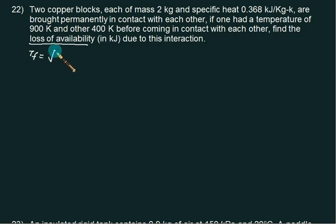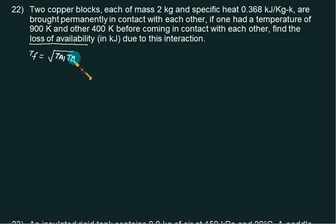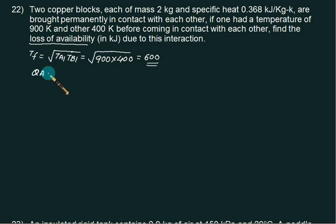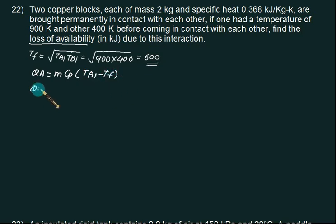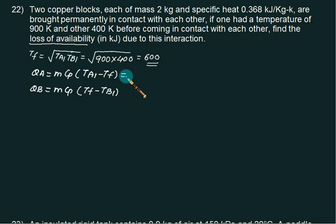First, we assume entropy generation equal to 0 and ideally find T_final. When we use this equation with entropy generation equal to 0, it means that some heat is lost to the surrounding. So T_final will be the square root of T_a1 multiplied by T_b1, which is the square root of 900 into 400. That answer comes out to be 600. If the final temperature is 600, we can calculate heat ejected by block A as mCp(T_a1 − T_f) and heat received by block B as mCp(T_f − T_b).